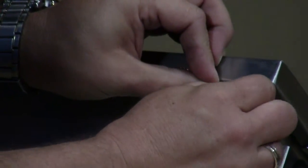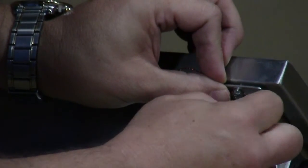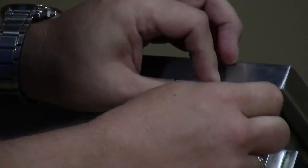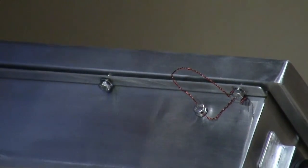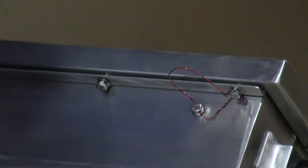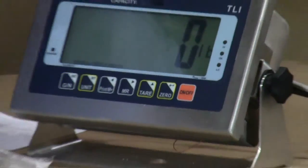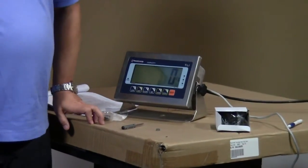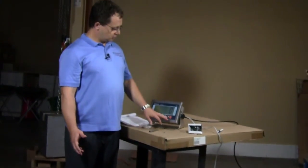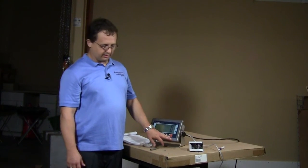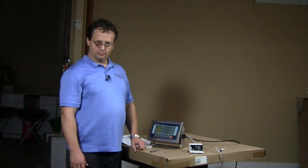Now, after you do all that, you can insert the lead seal at the end and use a plier or a sealer to seal the indicator. At this point, you're done with the calibration. You can use the scale in a legal for trade environment. Thank you.